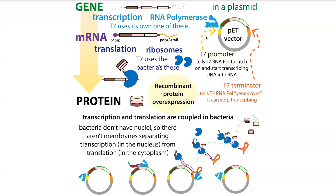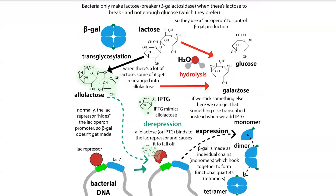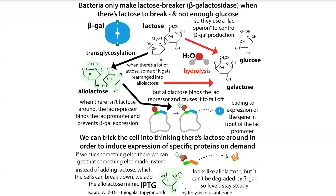So you'll often see the T7 system used as well. One last note: beta-gal is actually made in monomers — single chains — that group up into dimers and then functional tetramers. That's just a technical note. I hope that helped you understand how we use this lac-inducible expression system to make things on demand, and why we use IPTG instead of adding lactose or allolactose.